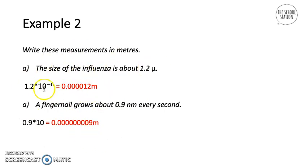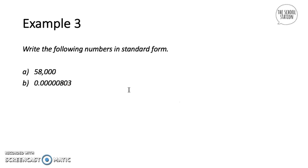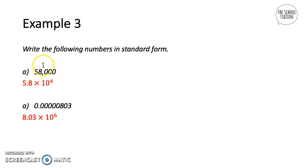Example three: write the following numbers in standard form. You follow the rule — find the number between 1 and 10. For 58000, you can use 5.8, then count how many places it takes to get to the original number: 1, 2, 3, 4 — so the answer is 5.8 times 10 to the power of 4.